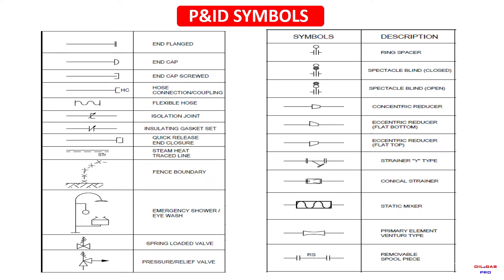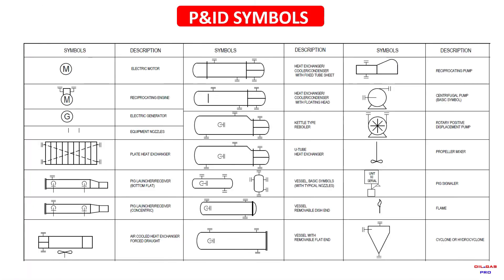Strainer, Y-type strainer, static mixer, primary element, entry type, removable spooled piece. Electric motor, spur gearing, engine, electric generator, equipment nozzles, plate heat exchanger, pig launcher and receiver. Concentric air cooled heat exchanger, forced draft heat exchanger, cooler condenser with fixed tube sheet heat exchanger.